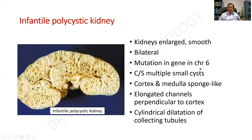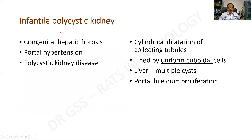There is a mutation of the gene on chromosome 6. Multiple cystic spaces can be seen, and it is more or less like a sponge with elongated channels perpendicular to the cortex and cylindrical dilatation of the tubules. It can be associated with congenital hepatic fibrosis, portal hypertension, and polycystic kidney disease — these go hand in hand. Microscopically, there is cylindrical dilatation of the collecting tubules lined by uniform cuboidal cells, and there is portal bile duct proliferation.